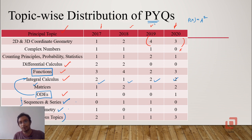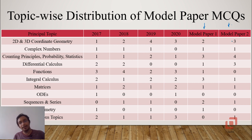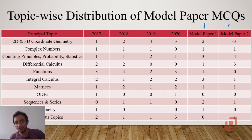The board has also released two mock papers for 2021, which I have analyzed as well. You can find that distribution in the last two columns — model paper one and model paper two. More or less, the topic-wise distribution of the MCQs was similar to the actual previous year's questions.